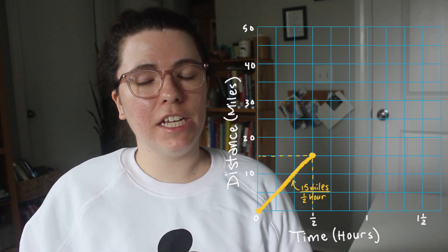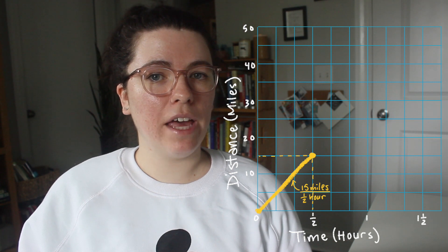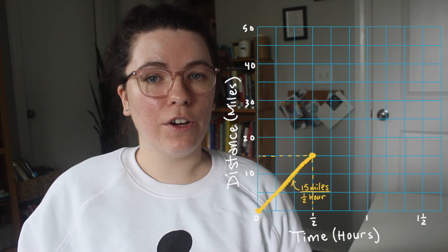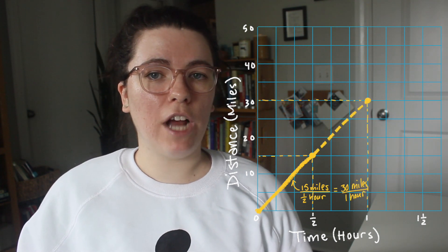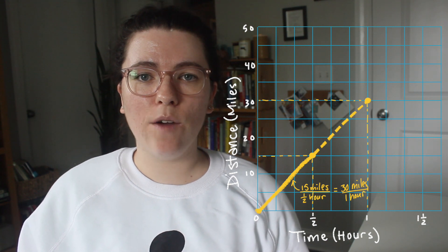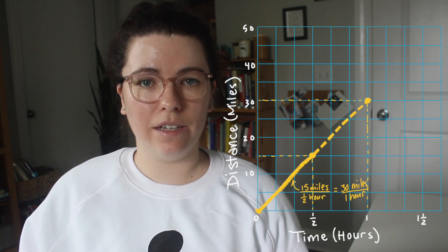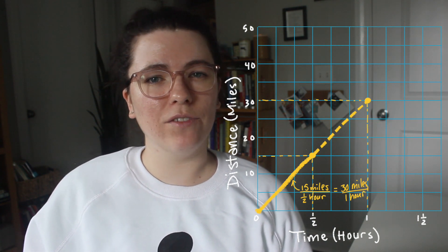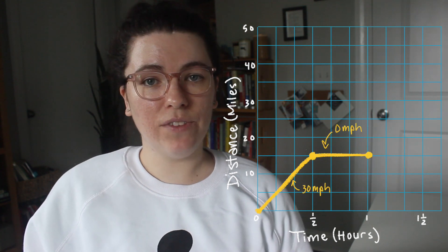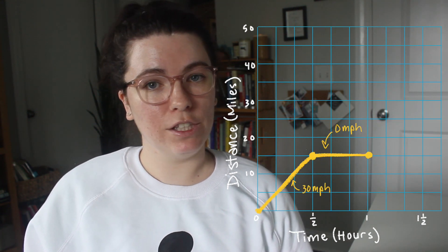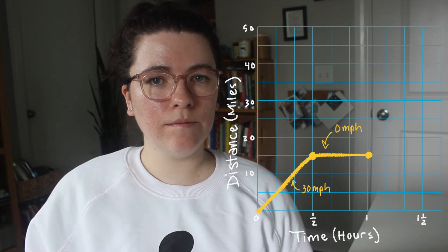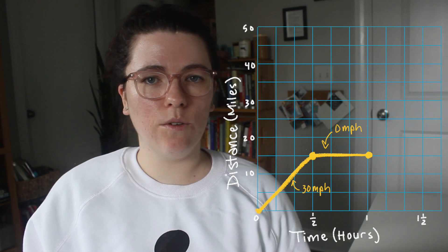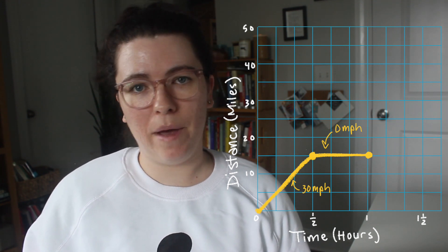This line on the graph is a representation of a trip to a local mall. You can see that the mall is 15 miles away from my house and it took me 30 minutes to get there, or half an hour. If I had kept traveling at that same velocity for a full hour, I would have traveled 30 miles. That's why the velocity here is 30 miles per hour, even though I only traveled 15 miles. This flat part of the graph is the time I spent at the store — time is still progressing, but I'm not changing my distance from my house.